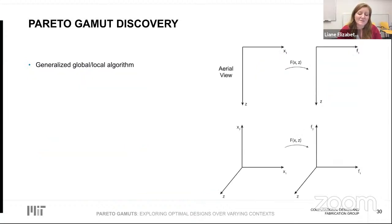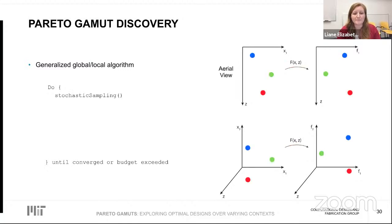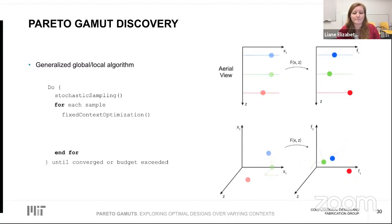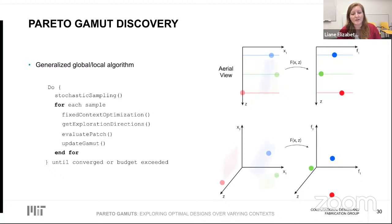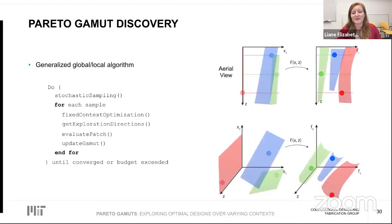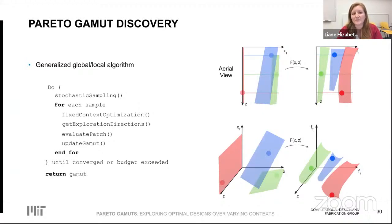In our full discovery algorithm, we sample several designs throughout the augmented space, then push them toward the Pareto gamut using the target-seed method. Once we have initial points on the Pareto gamut, we explore and find entire patches by computing our continuation scheme and expanding as before. Once the full Pareto gamut is discovered, we return it to the user so they can begin exploring their optimal designs.